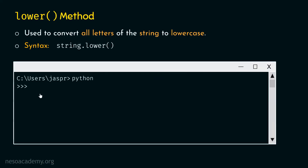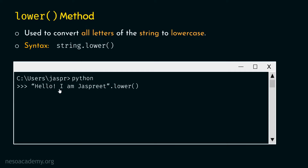Let's open the command prompt and type: 'Hello, I am just breathe'.lower() — applying the lower method to this string. As the name suggests, it converts all letters to lowercase. If we hit enter, we get 'hello, i am just breathe', where H, I, and J are now lowercase letters — they were previously uppercase.